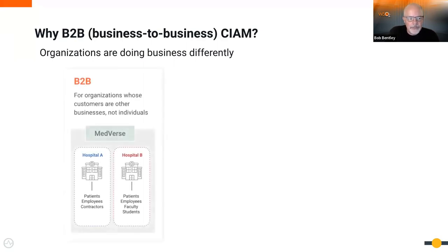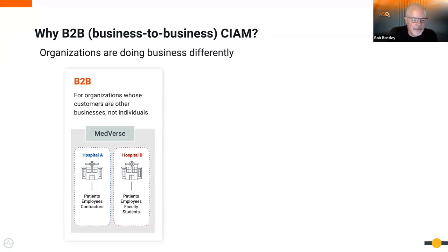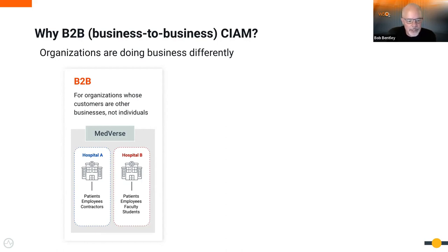The most common form of B2B SIAM is where organizations don't do business directly with consumers — they do business with other businesses. Here's a made-up company called Medverse. They offer services like scheduling ambulances, selling those services to different hospitals — Hospital A and Hospital B — which in turn offer them to their own constituents: patients, employees, contractors, faculty, students. The actual customers are owned by Hospital A and Hospital B. That's the most simple model of B2B.